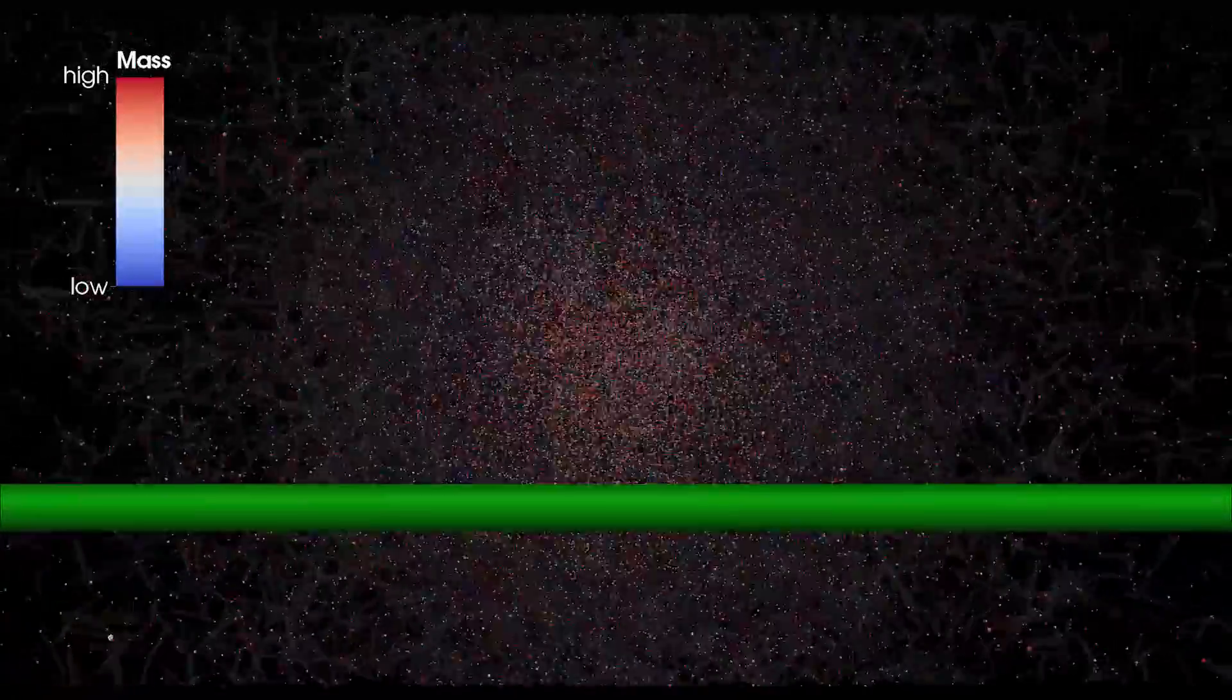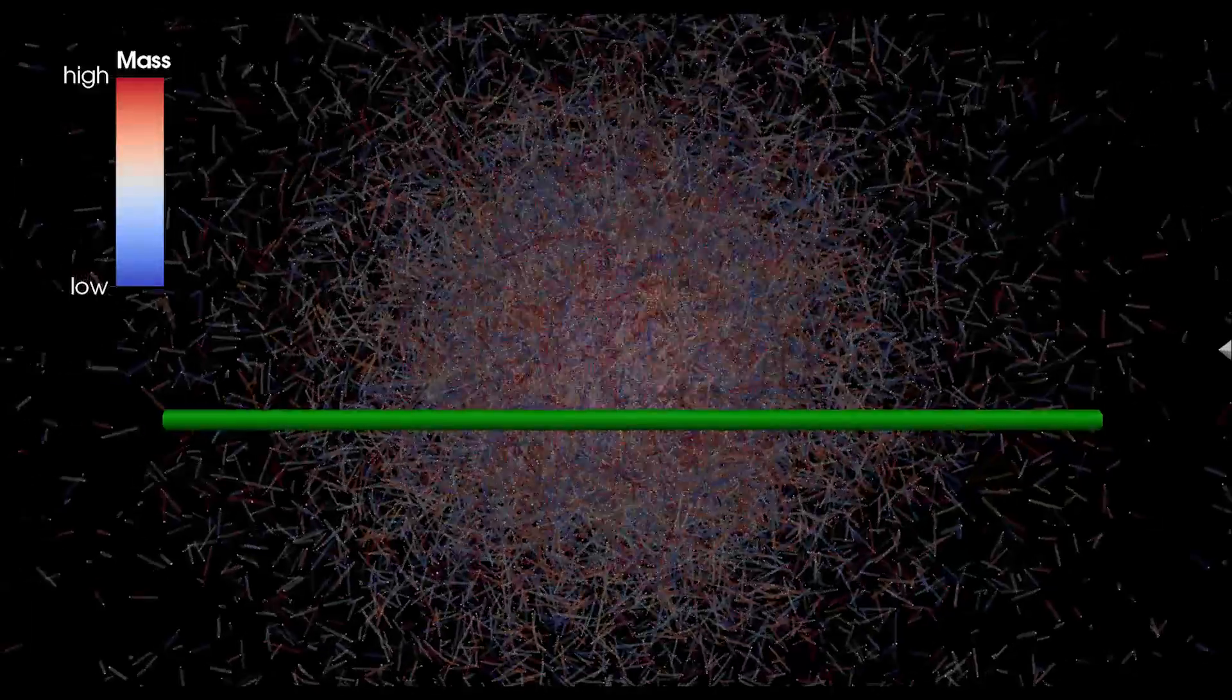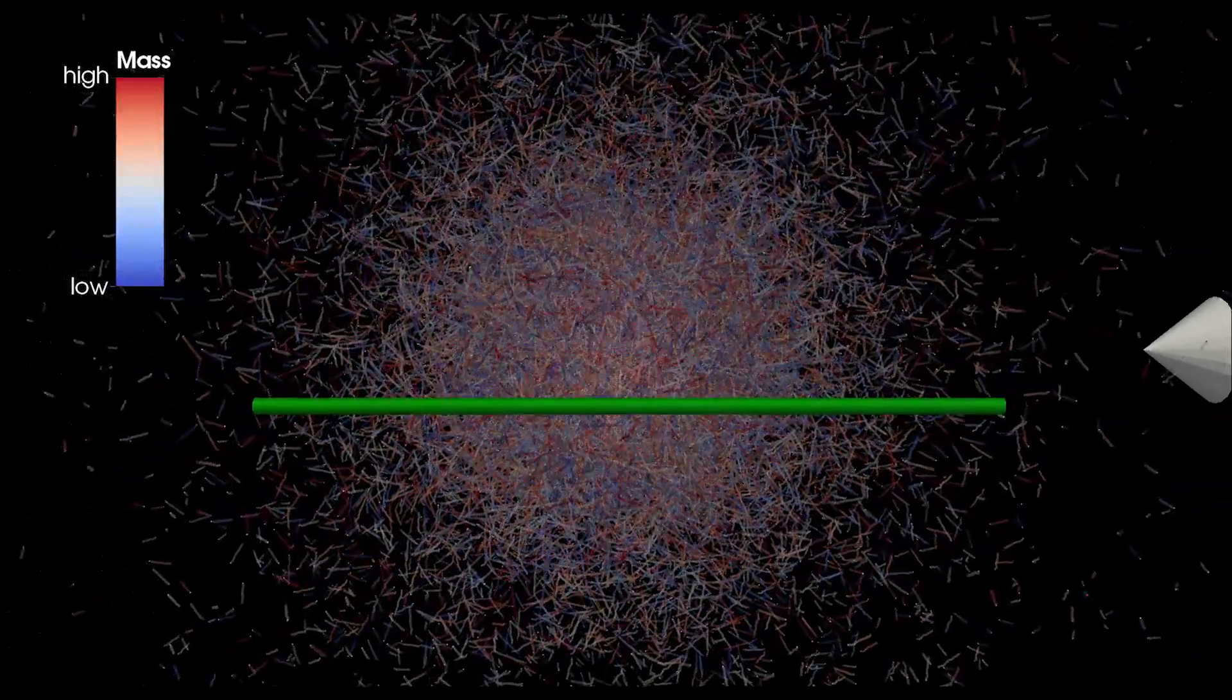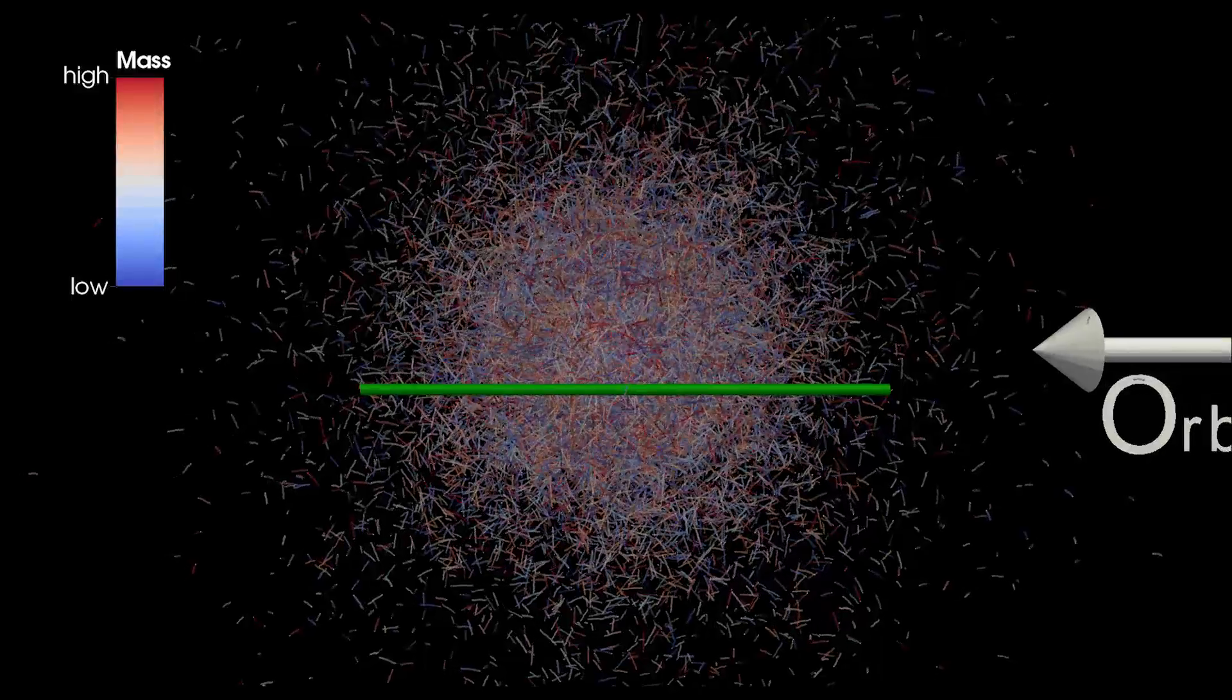As we pull away, trails are added to help visualize the path of individual stars. This green line demarcates 10 parsecs. The arrows indicate the direction of the cluster's orbit around the galactic center.